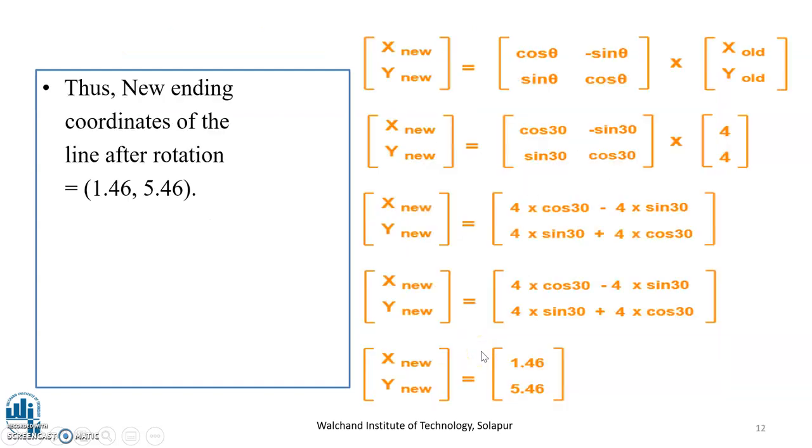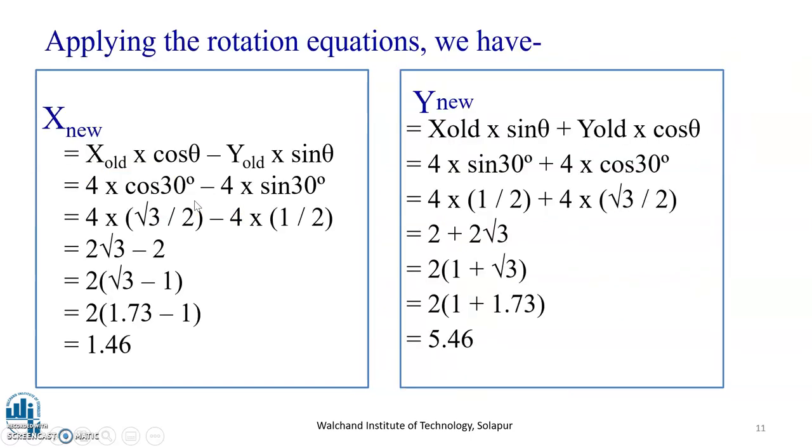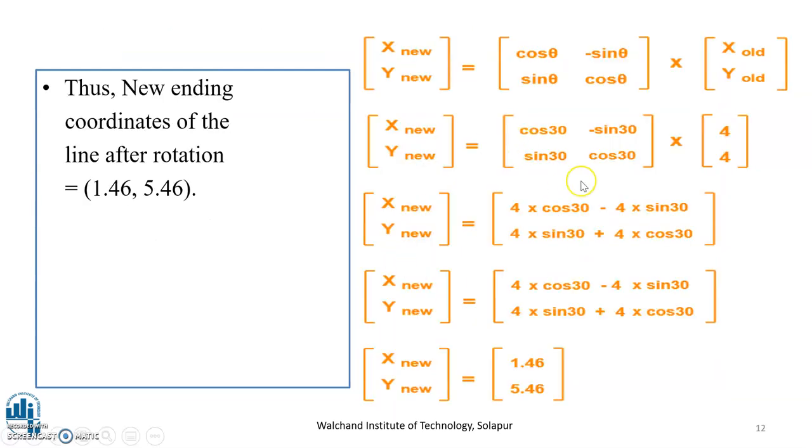After we solve the given matrix in this format, that was the stepwise approach. Here it is, this approach in matrix representation, that is X-new, Y-new is equal to cos theta minus sin theta, sin theta cos theta into X-old, Y-old. On expanding, we have got the same thing. The new ending coordinates of the line after rotation are 1.46, 5.46. In this previous method, we simplified stepwise by solving and putting values. Here, we have used the matrix representation to get the answer.